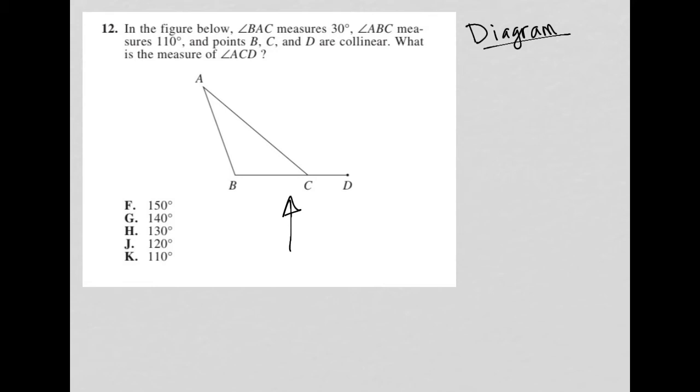So let's get started. The question says, in the figure below, angle BAC measures 30 degrees. So I'm going to fill that in. BAC, which is here, is 30. Angle ABC measures 110. So ABC, that brings us here, is 110.